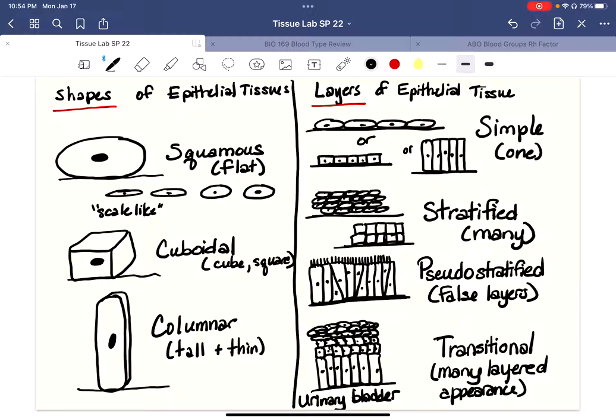Okay, so we've got our shapes: squamous, cuboidal, and columnar. And then we have our layers: simple, stratified, pseudostratified, and transitional. Great, thank you.